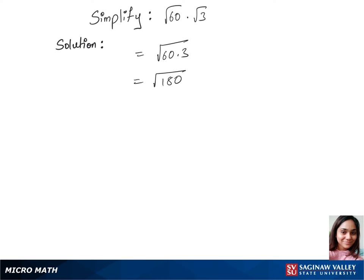Let's split 180 into a different multiple: square root of 36 times 5. We can separate the square root between those two numbers — root 36 times root 5. Root 36 is 6, because 36 is 6 squared, and root 5 remains. This is our final answer: 6 root 5.